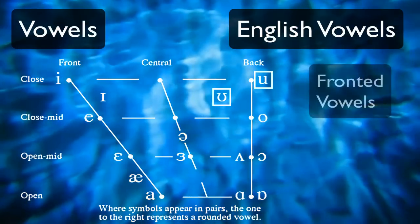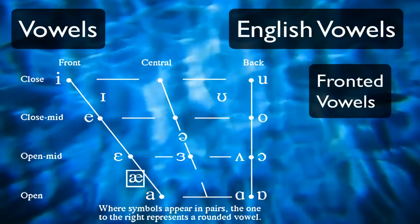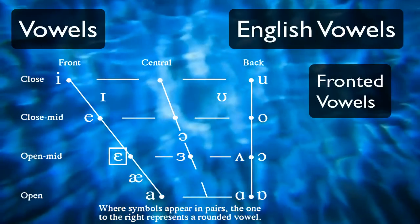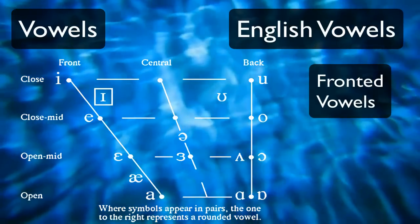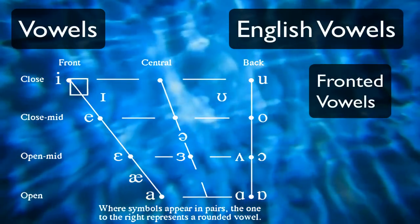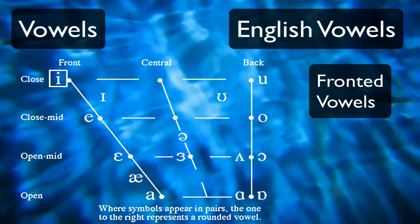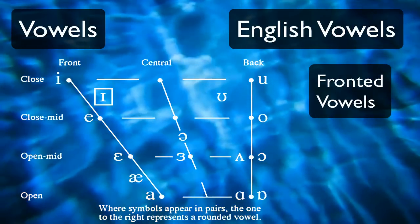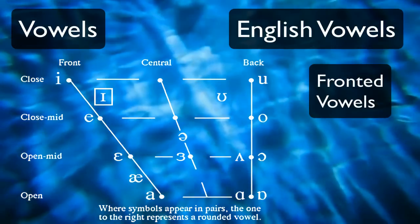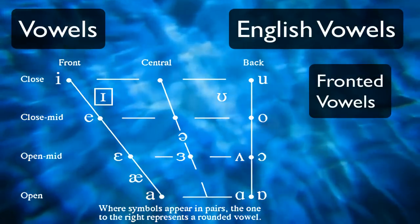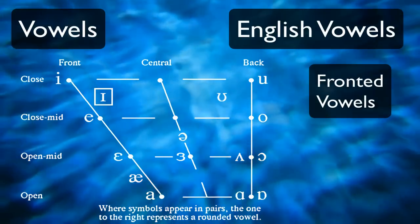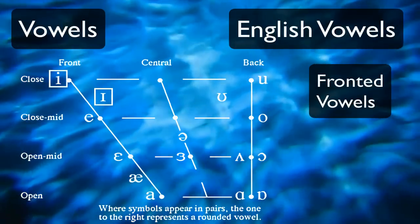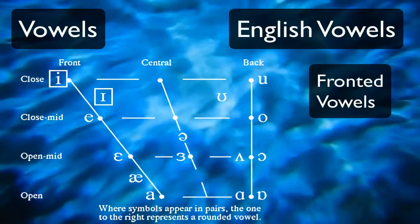The fronted vowels are A as in cat, E as in bed, I as in sit, and E as in see. You'll notice that your tongue retracts a bit on I as in sit, because it's a slightly more backed vowel than E.